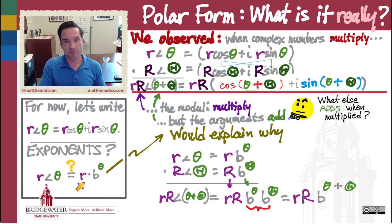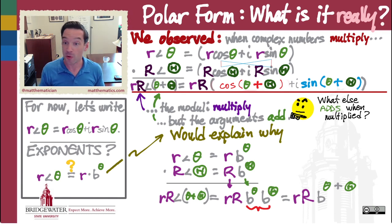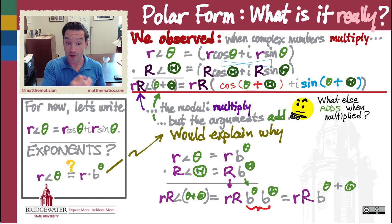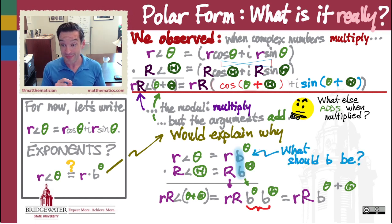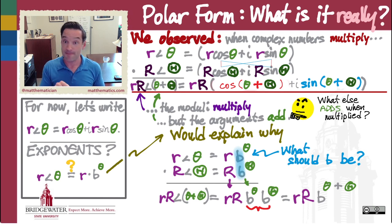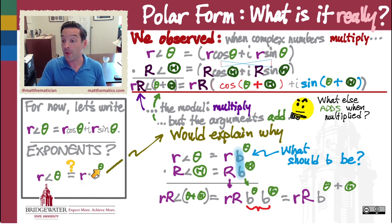This proposal — what mathematicians sometimes call an ansatz, a German word meaning a motivated hypothesis — seems pretty promising because it makes complex numbers multiply in the way we observed with respect to modulus and argument. We need both bases to be the same b so that the exponents add; different bases wouldn't allow that. So the big question is: what is b? How do we figure out what base to use to express a complex number as its modulus times something raised to the power of its argument?